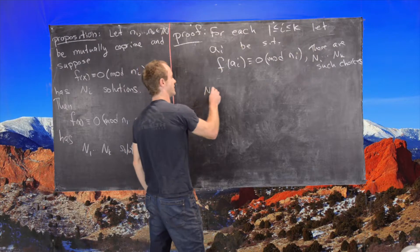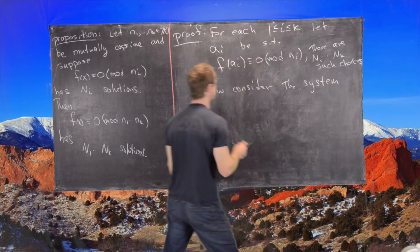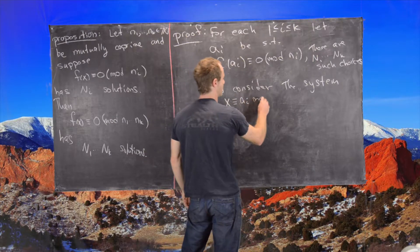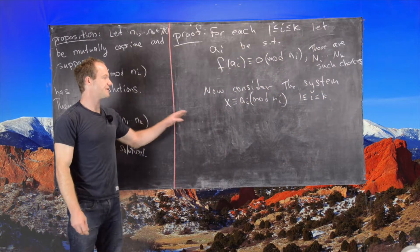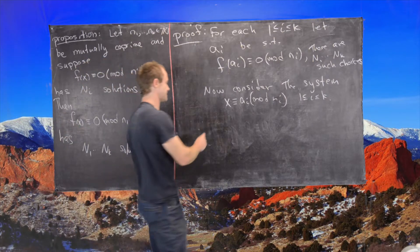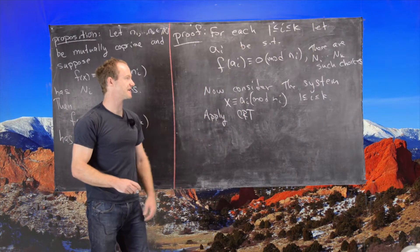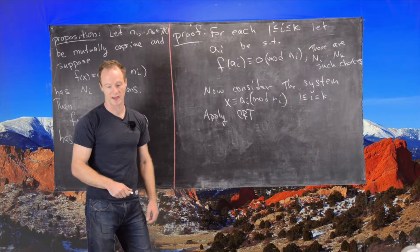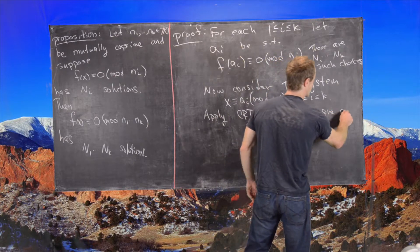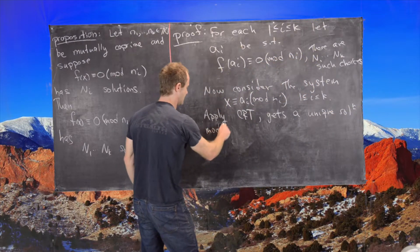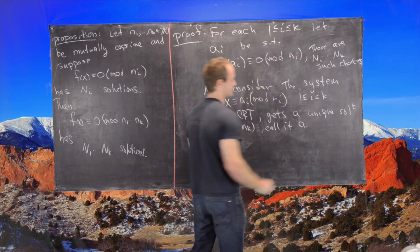From here, we consider the system of linear congruences: x ≡ a_i mod n_i for i from 1 to k. We can apply the Chinese Remainder Theorem, which says there is a solution to this system that is unique modulo the product N1 through NK. This gives a unique solution mod N1·…·NK, which we call a.